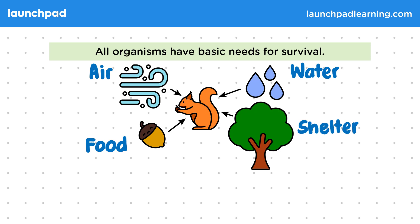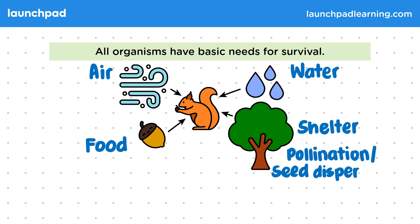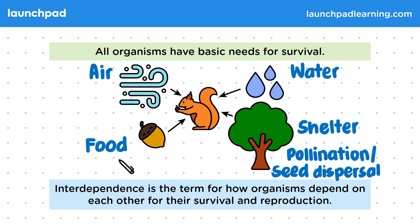Organisms might rely on other organisms in their community for these needs, and plants may also rely on other organisms for pollination or seed dispersal. Interdependence is the term for how organisms depend on each other for their survival and reproduction.